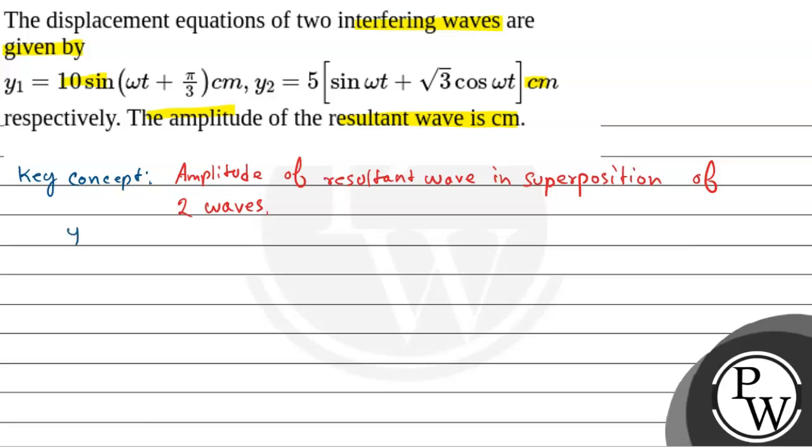Let us say the first wave y1 equals amplitude a1 into cos omega t. And second wave equation y2 equals a2 cos omega t plus phi. The phase difference between them is phi.